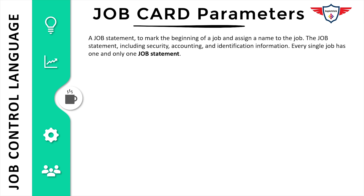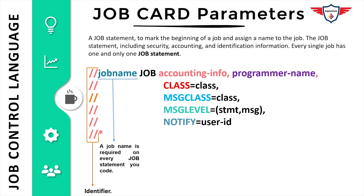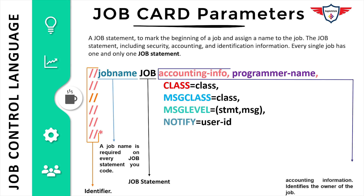Now let's look at the structure of a JCL job card and the different parameters used when defining one. The first two columns are used to specify the identifier. Then you have the job name, which is required on every job statement. Next is the JOB keyword, which specifies that this set of statements is a job statement. The next parameter is accounting information, used to specify the account number or other accounting details.